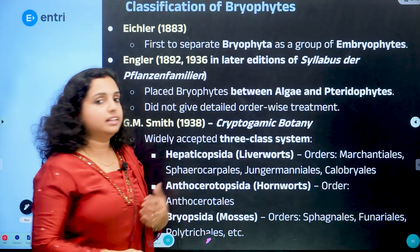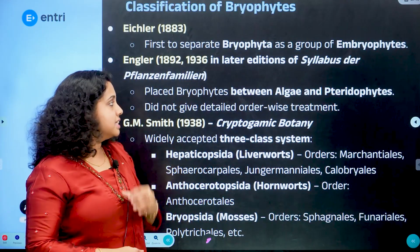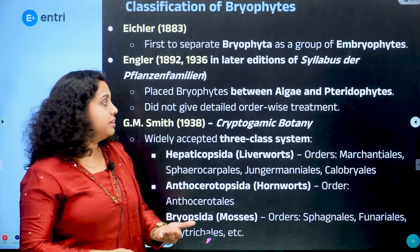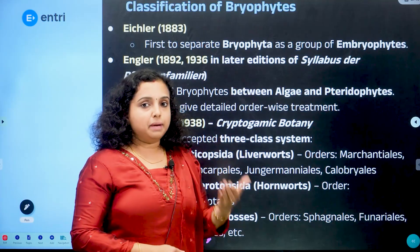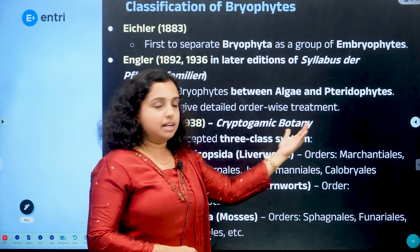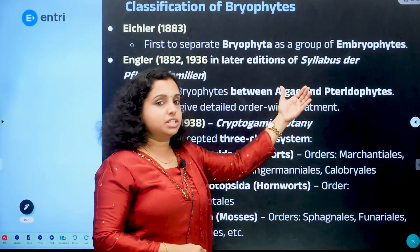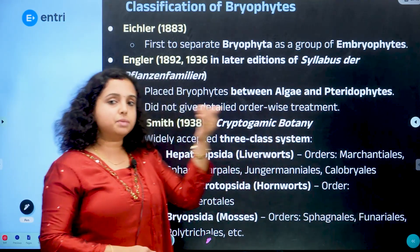Eichler placed bryophytes between algae and pteridophytes. This is significant because algae are more advanced, and bryophytes are a little more primitive in comparison to pteridophytes.